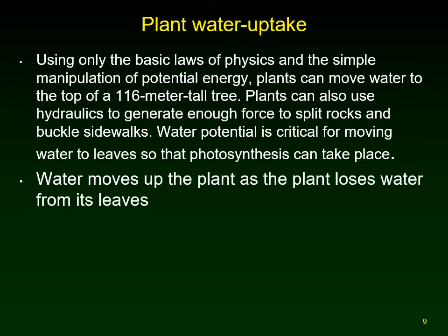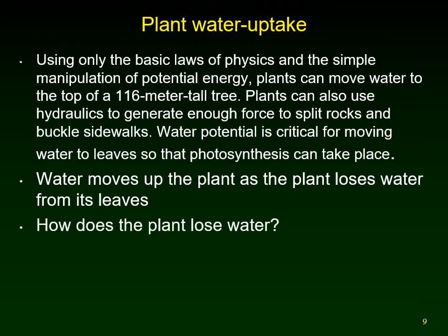Water moves out of the plant as it evaporates out of the leaves. Transpiration is the evaporative process of water out of the stomata in the leaves — the leaves sit up in the air with those little holes that allow carbon dioxide to go in, but as carbon dioxide goes in, water goes out. That process of transpiration is actually an important part of the pump for sucking more water up into the leaves.